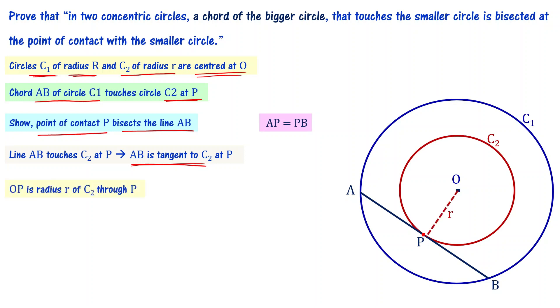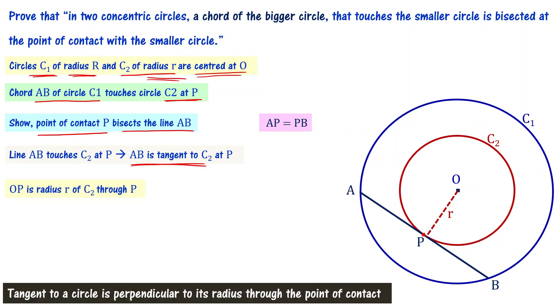For the smaller circle, we know that OP is the radius. We know a theorem from this chapter on tangents and secants to a circle. A tangent to a circle is perpendicular to its radius through the point of contact. At point P, there's a 90 degree angle, so OP is perpendicular to AB. AB is the tangent, OP is the radius. The point of contact is P here.